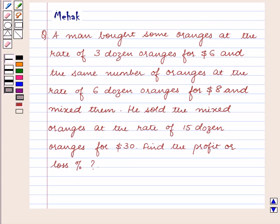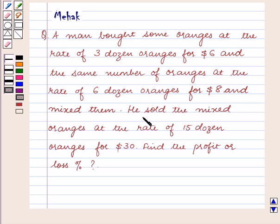Hello and welcome to the session. In this session we are going to discuss the following question: A man bought some oranges at the rate of 3 dozen oranges for $6, and the same number of oranges at the rate of 6 dozen oranges for $8, and mixed them. He sold the mixed oranges at the rate of 15 dozen oranges for $30. Find the profit or loss percent.